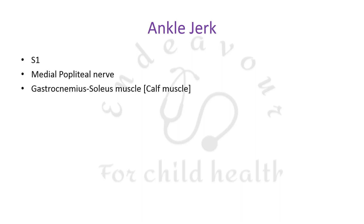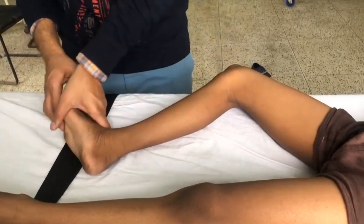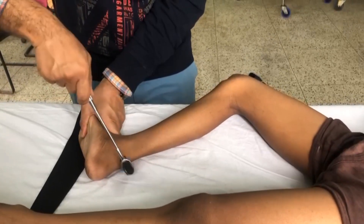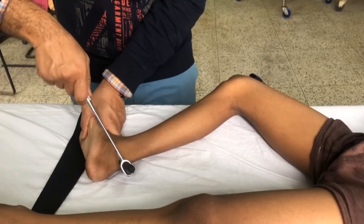For the ankle jerk, the root value is S1 and we are testing the medial popliteal nerve. The muscular contraction observed is of the gastrocnemius-soleus muscle, and exposure should be from above the knee joint. To elicit it, the hip is flexed and internally rotated — remember that when we internally rotate the hip, it moves slightly outwards. We then flex and dorsiflex the foot, tap the tendo Achillis, and this should elicit contraction of the gastrocnemius-soleus muscle and consequent plantar flexion.